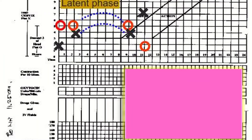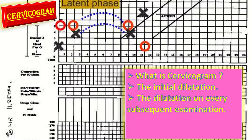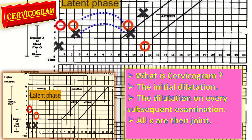The cervicogram is a very important component of the partogram as it exhibits the pattern of cervical dilatation. The initial dilatation is measured either at induction of labour or on admission and is plotted on the cervicogram as X at time zero. The dilatation on every subsequent examination is then plotted against time since the first examination. All the X marks are then joined with a line. The line developed in this manner should ideally lie to the left of the thick black oblique line, which is called the alert line.